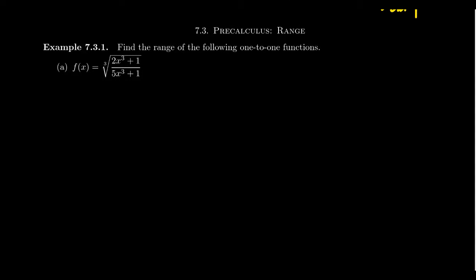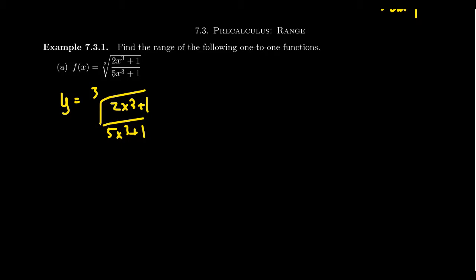Consider this example: let's find the range of the one-to-one function f(x) equals the cube root of (2x³ + 1) over (5x³ + 1). It might not be obvious that this is one-to-one, but it is. So we take the equation y equals the cube root of (2x³ + 1) over (5x³ + 1) — make sure the cube root extends over the entire fraction. To switch to the inverse function f⁻¹, we swap the roles of x and y.